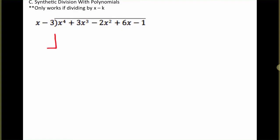In this case, we're going to make our box to start. Notice it works because we are only dividing by x minus 3. And then in the box, we will put a 3. Then following the box, we'll put just the coefficients. And here, if you look, it doesn't skip a degree at all. So we can just go 1, 3, negative 2, 6, negative 1.